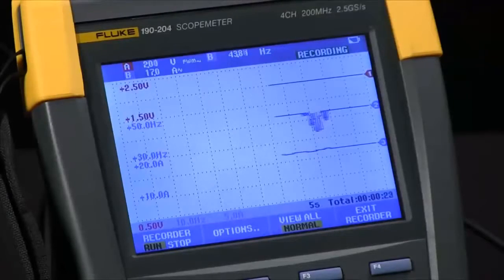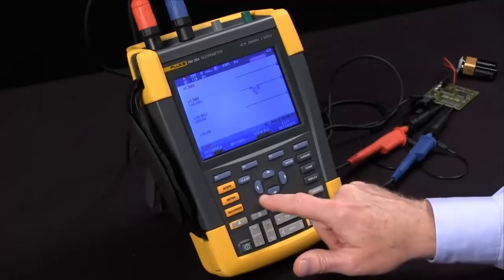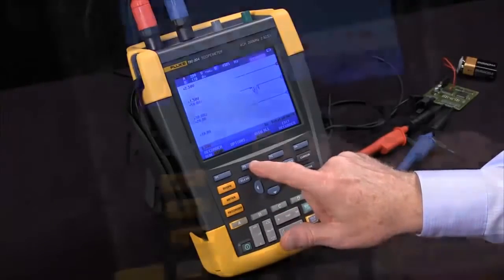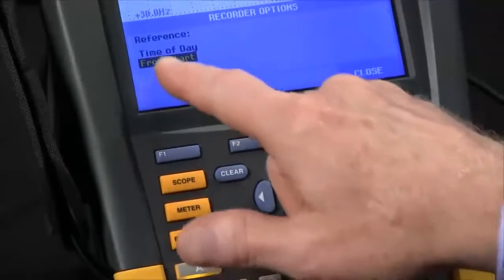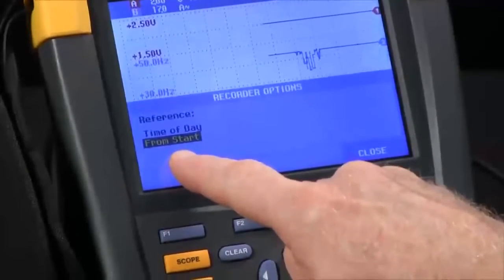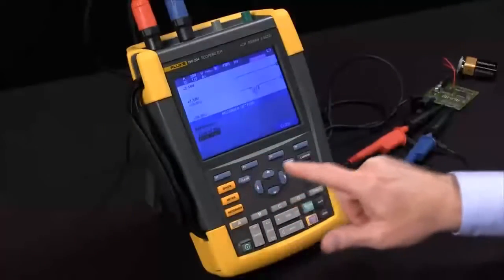When you're ready to stop, you hit F1 to stop the recording. You've got options that you can set up, which are good to look at, as far as how you record the data, time of day or from the start. So you can have elapsed time or the actual time to come back and review the data.